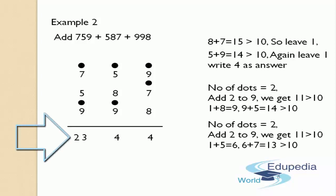So the answer is 2, 3, 4, 4 — 2344 is the answer. That is what you get when you add 759 plus 587 plus 998. This is the most easiest way to get answers by using the Bindavankana method in Vedic Mathematics. The one rule that you have to remember each and every time is: whenever you are getting a 2-digit number after adding 2 digits, you have to place a dot on the top of the number that made you get a 2-digit result.